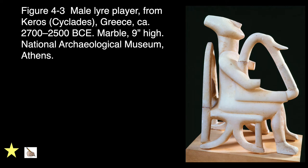Male lyre player from Keros, Cyclades, Greece, from around 2700 to 2500 BCE, made from marble and 9 inches high. The term Cycladic means from small islands. This was carved out of marble. The function was possibly to play music for the deceased in the afterlife, because it was found in grave sites laid next to the dead. This is one of the more elaborate male figures, and most male figures — not females — were found with instruments. We describe this as schematized, with flat planes and simplified, very geometric shapes. You see a harp with duck-bill ornaments as decoration. It may have been painted.